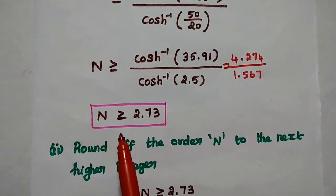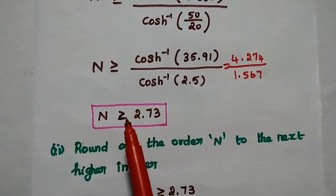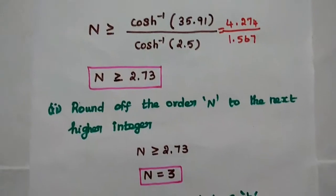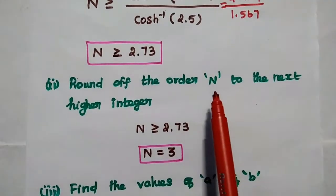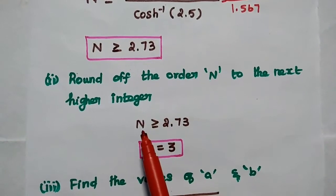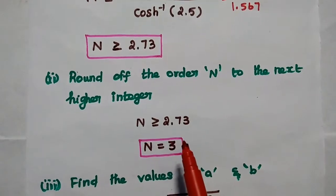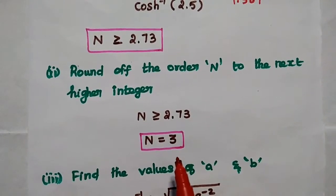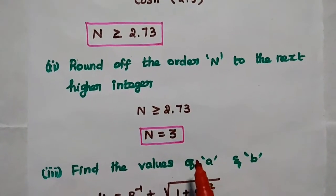We have obtained the order of the filter: N ≥ 2.73. The next step is to round N to the next higher integer. Since N ≥ 2.73, the next higher integer is 3, so N = 3. The given Chebyshev filter is a third-order filter.